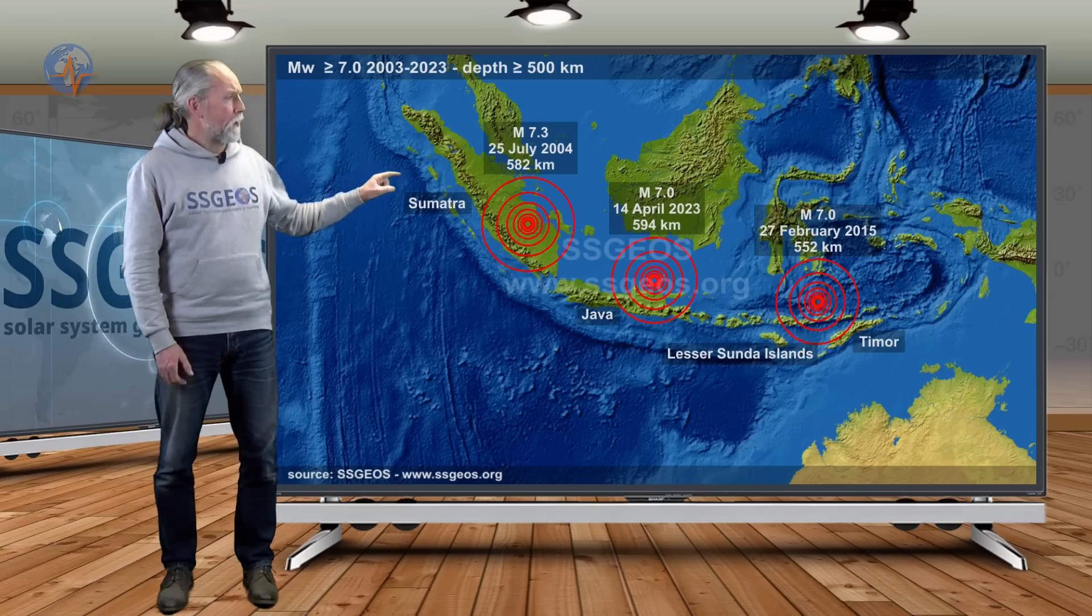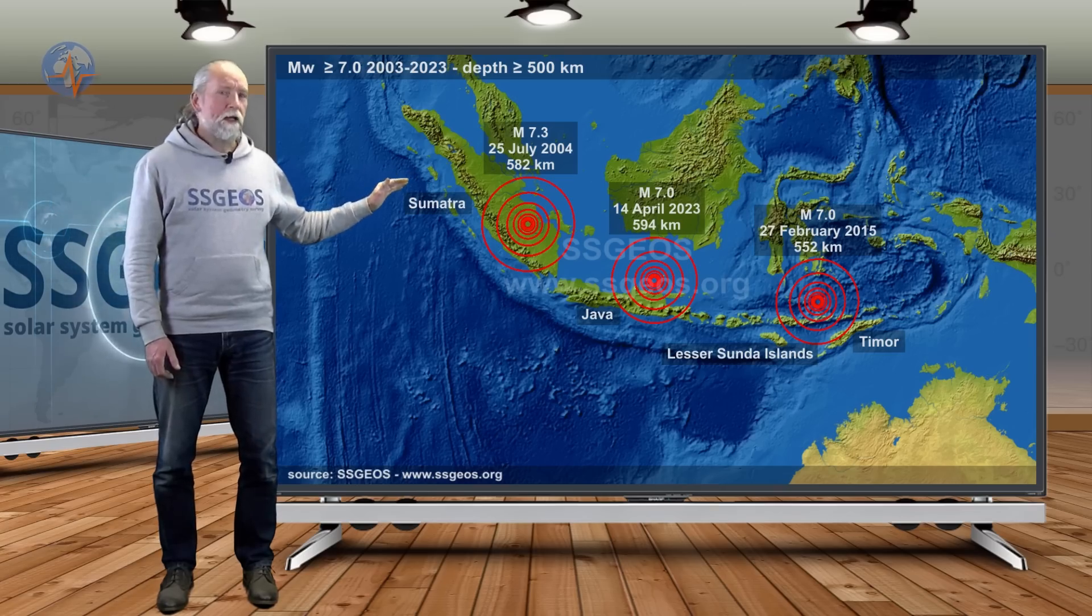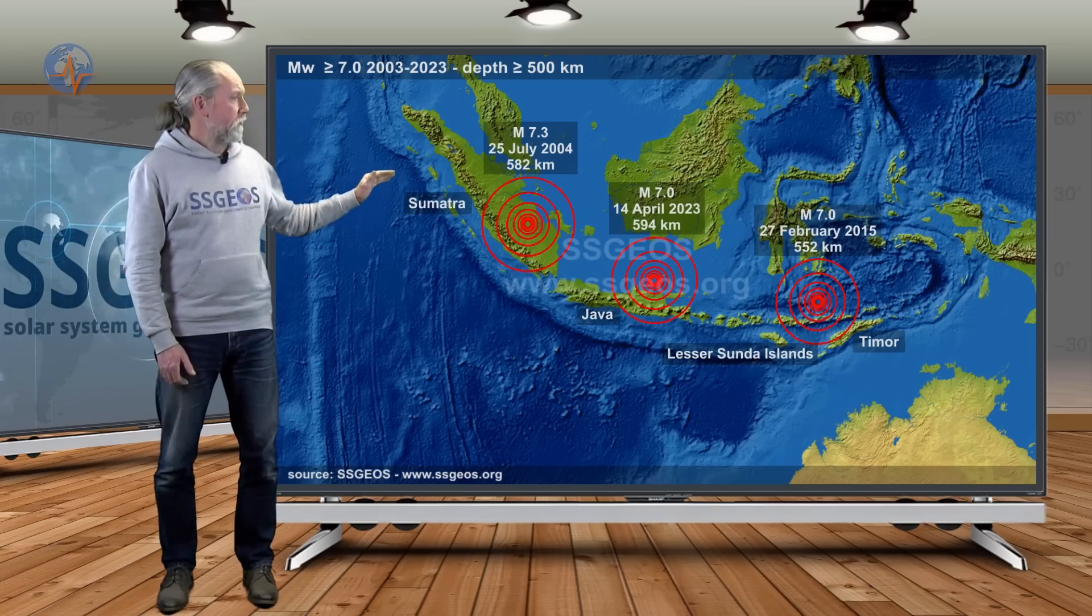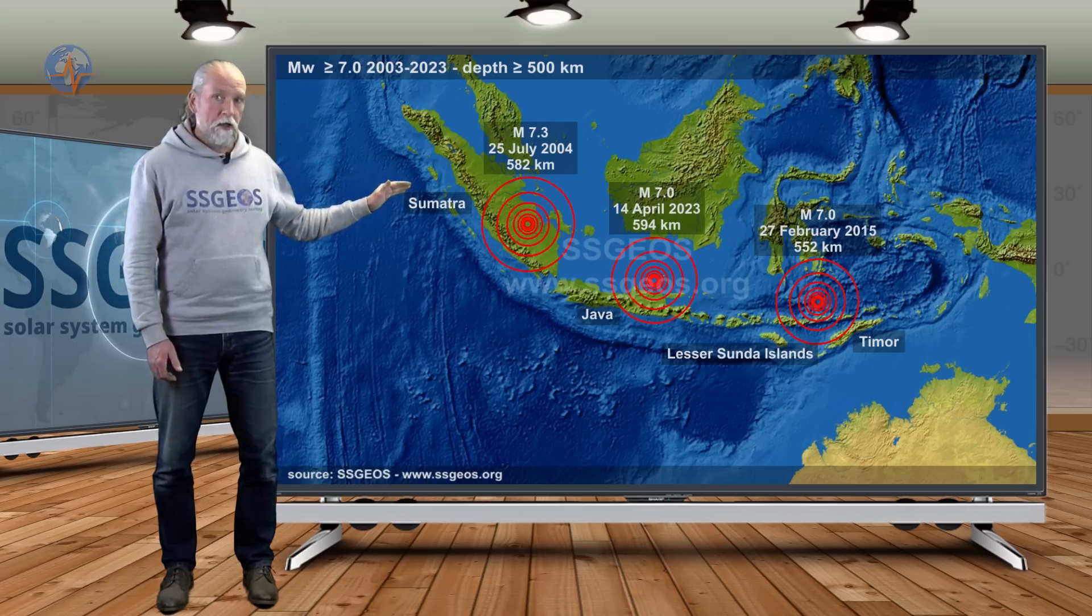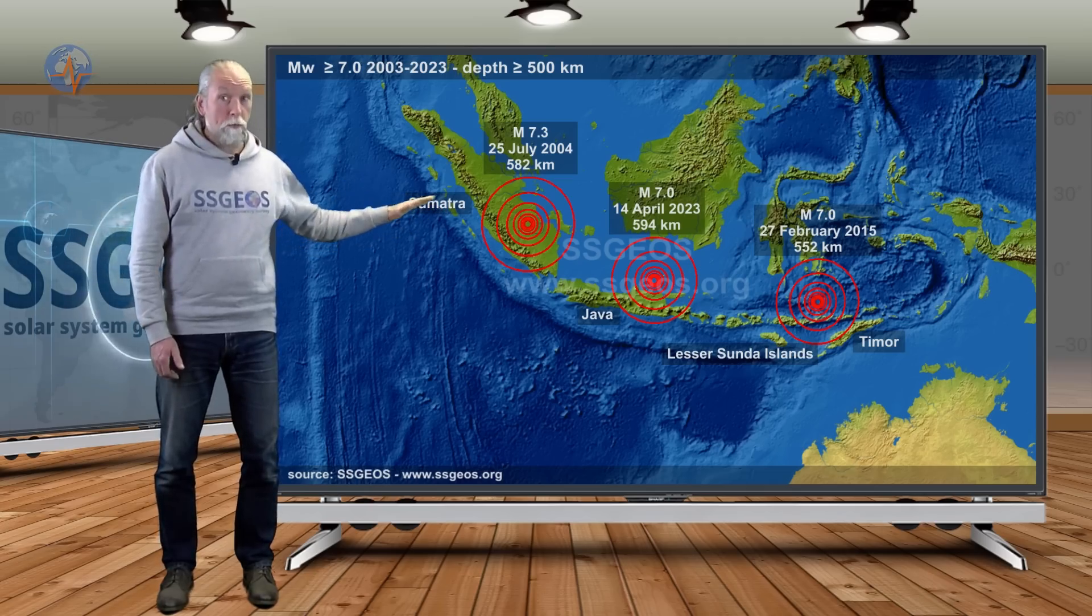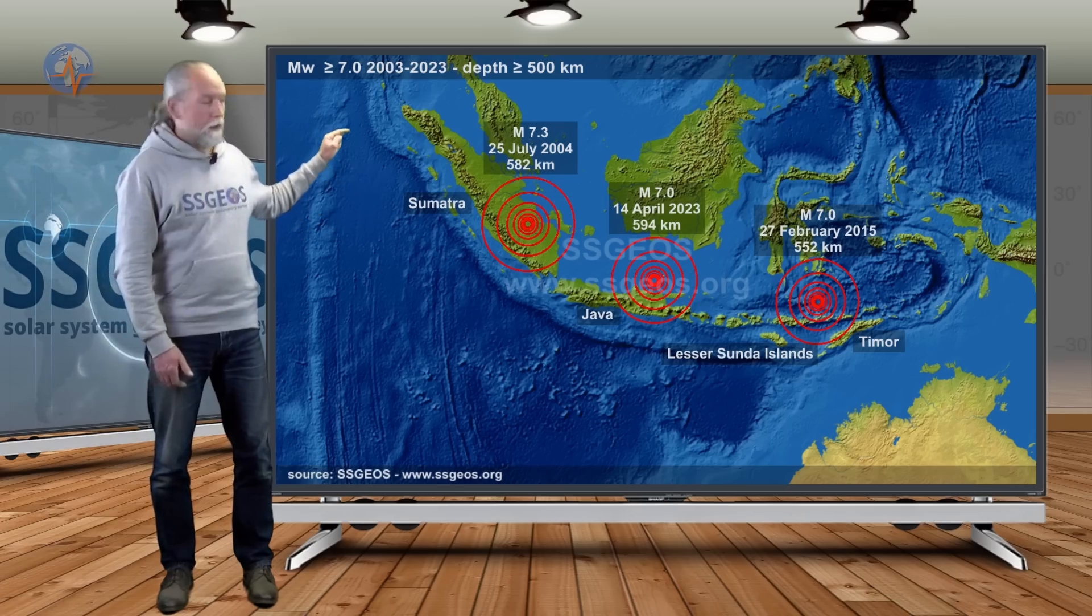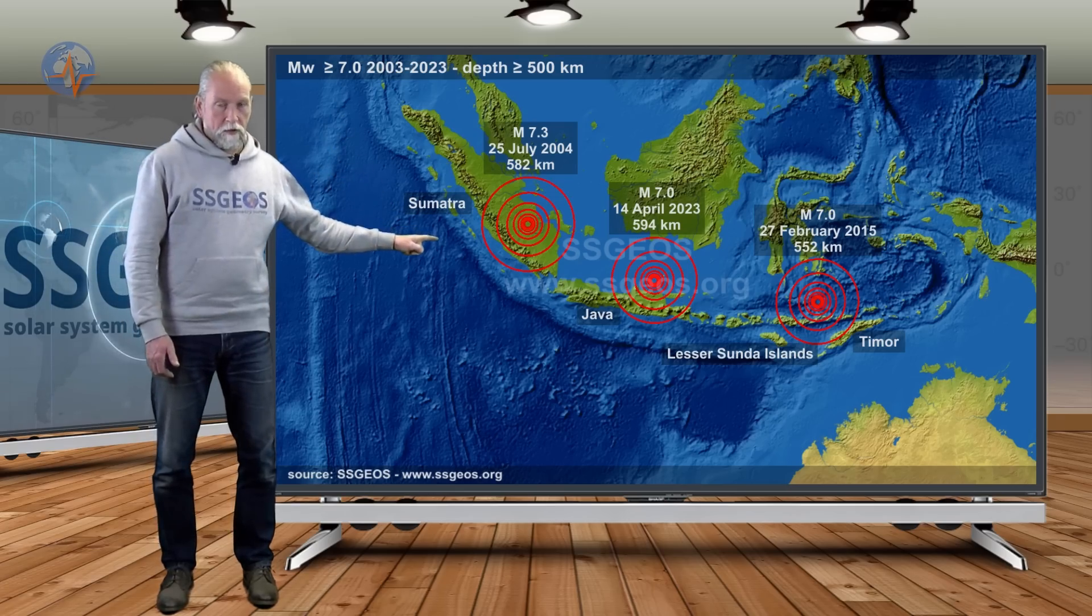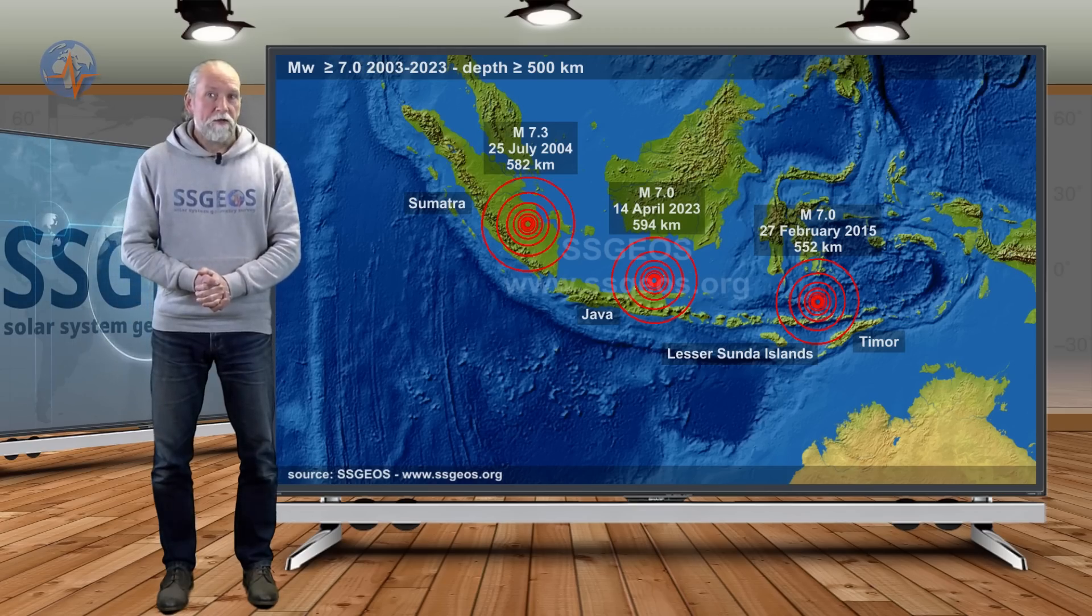There was also a magnitude 7 earthquake more to the east along the Banda arc on 27 February 2015, also 550 kilometers deep. This is more along the Banda arc rather than the Sunda arc that goes along Java and Sumatra. These major earthquakes do not occur very often this deep, and this was a very interesting seismic event. It was widely felt because it was very deep.